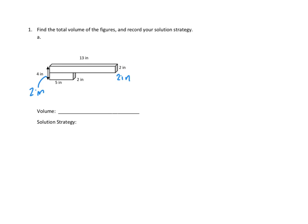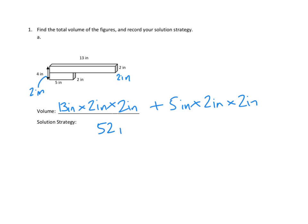I'm going to take the large one first. The length of that is 13 inches times two inches high times two inches wide. And then I'm going to add the volume of the bottom one — that's five inches long, times two inches high and two inches wide. So this would be 13 times four, which is 52 cubic inches. And this one would be two times two is four, times five is 20 cubic inches. So that would be a total of 72 cubic inches.